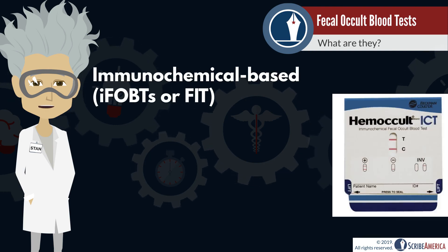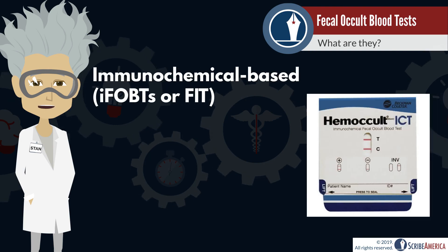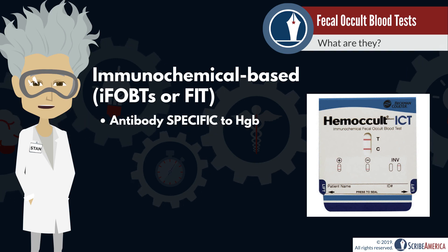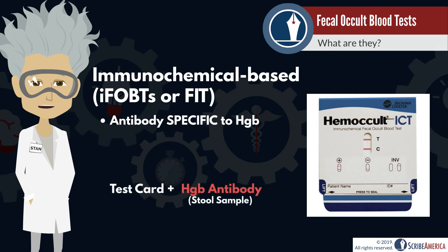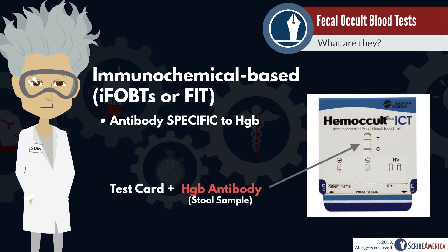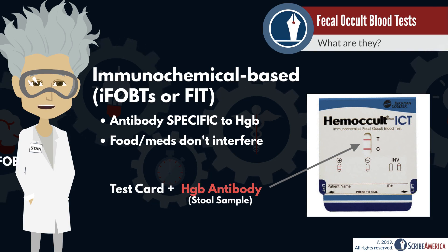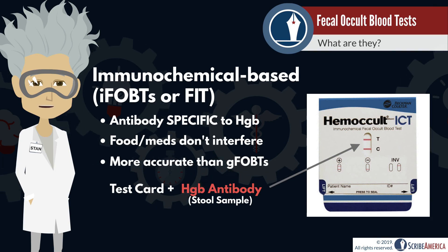The immunochemical-based FOBT does not rely on GUIAC paper to detect blood. This test reacts with an antibody specific to human hemoglobin. Foods and medicines don't interfere with this test, and it's considered to be more accurate.